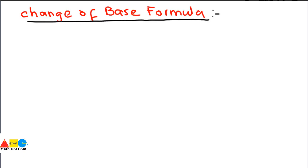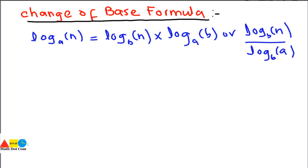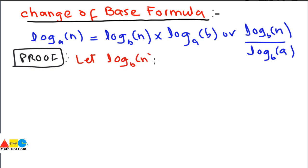We now move to the last law: the change of base formula. It is stated as: log_a(n) = log_b(n) × log_a(b), or equivalently log_b(n) divided by log_b(a). For the proof, let log_b(n) = x, which in exponential form gives b^x = n.